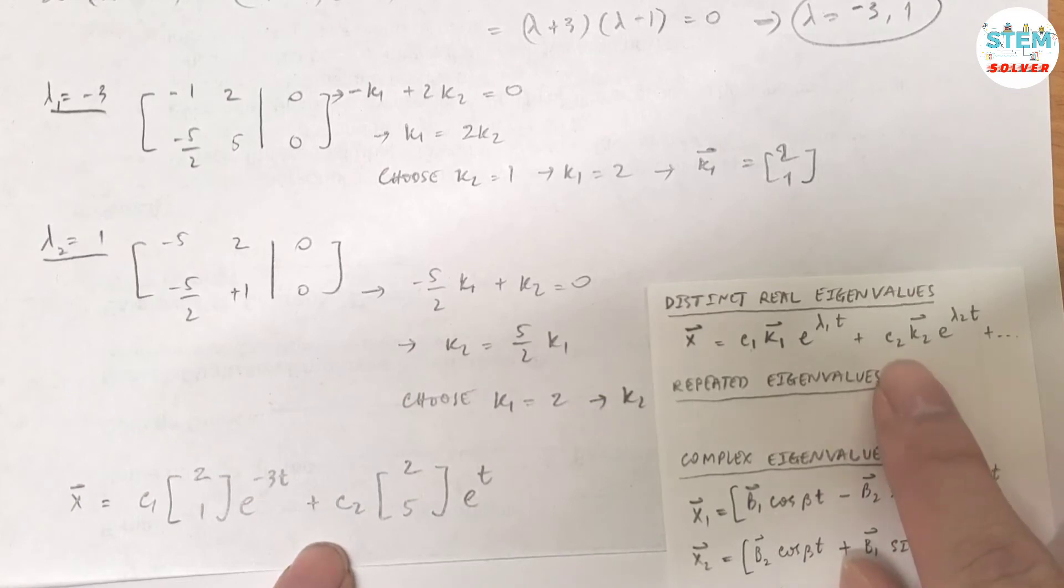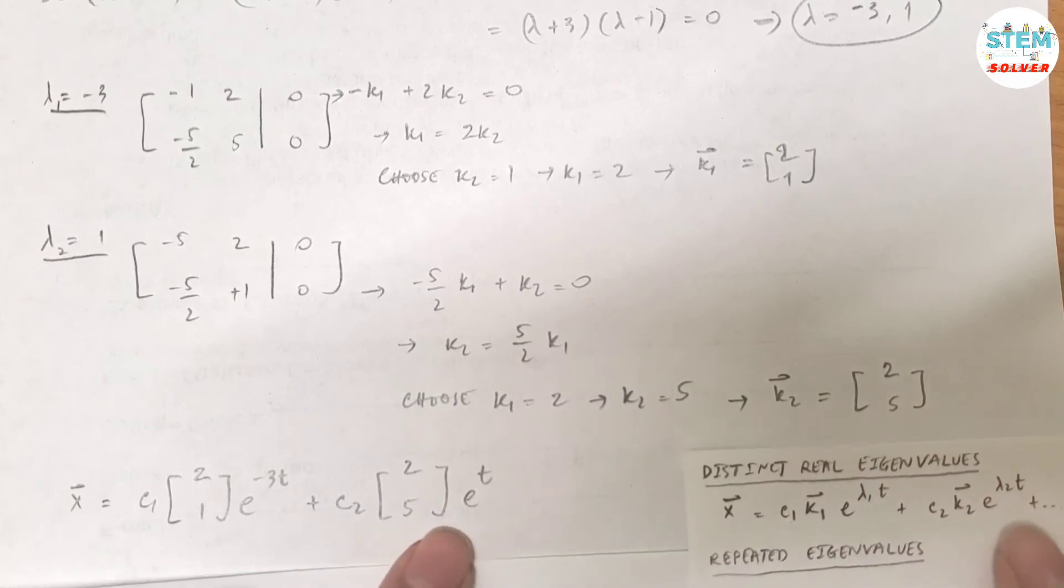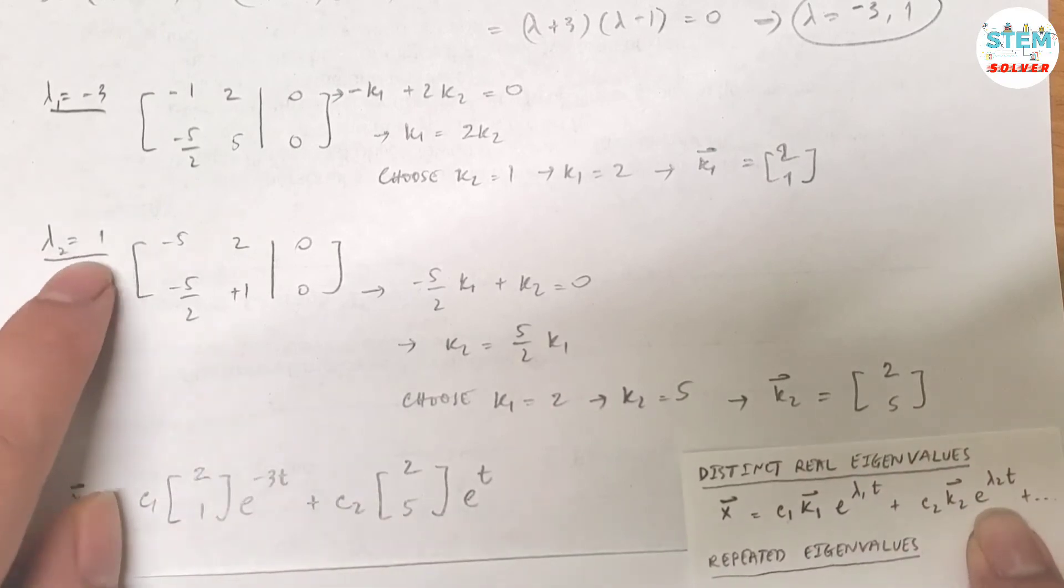So here's my lambda 2. Then plus c2, c2 is constant, c1 is constant. Vector k2 is 2, 5, e to the lambda 2t. Lambda 2 is 1, so e to the t.